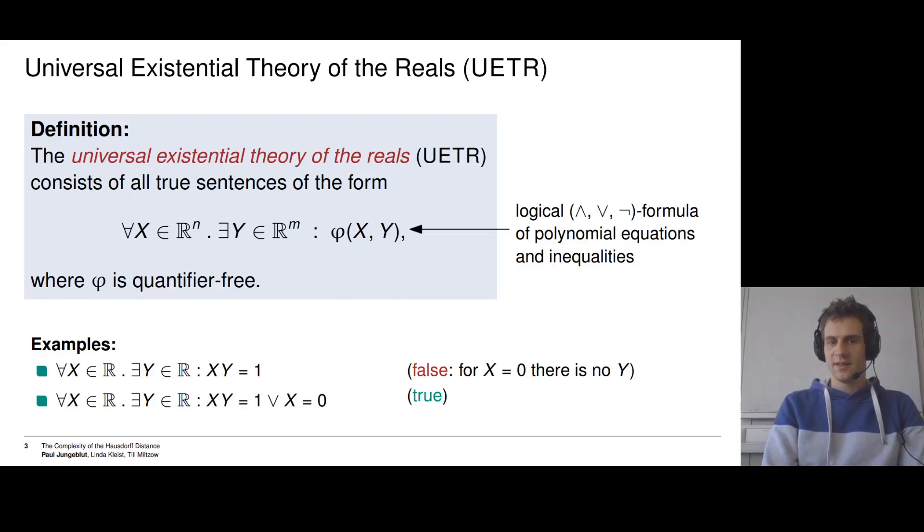But as this is the only counterexample, we can fix it. So the second example is basically a fix: for all real numbers x, there is a real number y such that x·y = 1 or x = 0. And this now is a true formula, so it belongs to UETR.